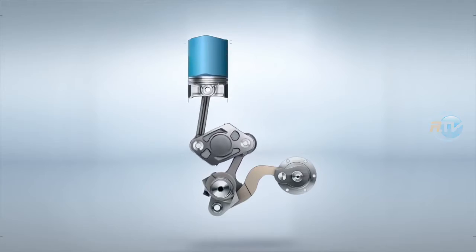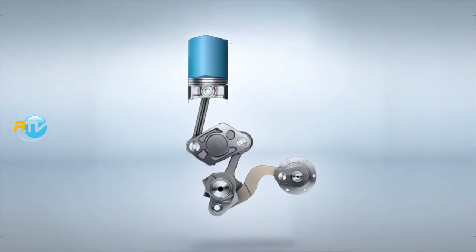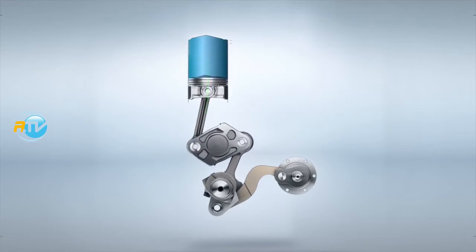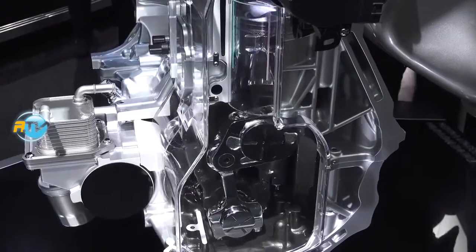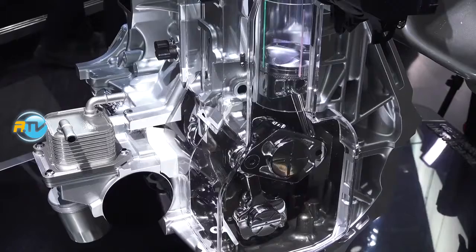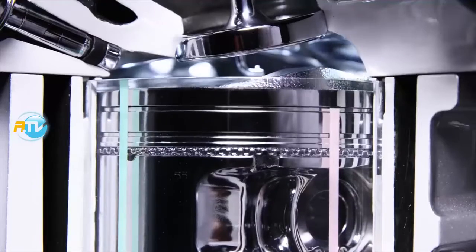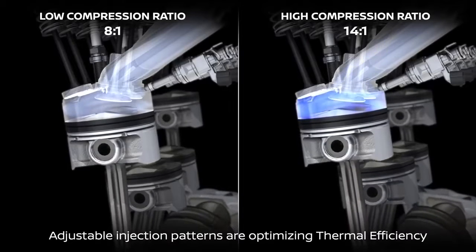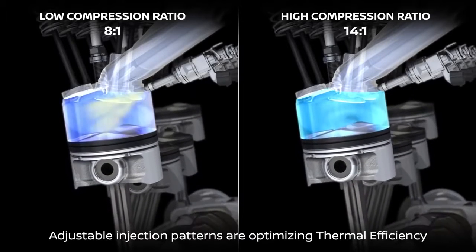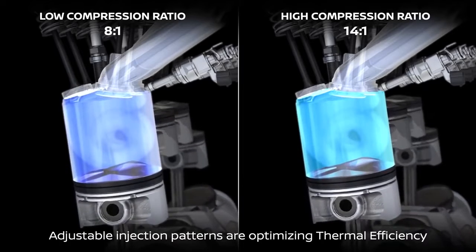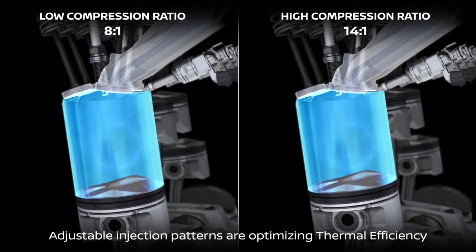The piston has a determined stroke, and when it reaches the top there is a remnant volume. How many times does that volume fit in the stroke of the piston — that is the compression ratio: 10 to 1, 8 to 1, 12 to 1. The smaller that combustion chamber is, the larger the compression ratio.